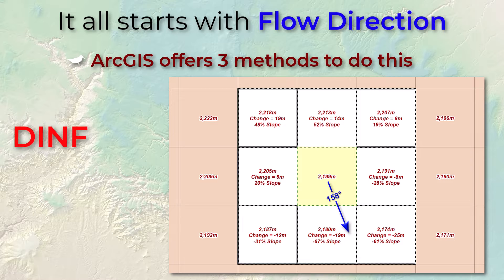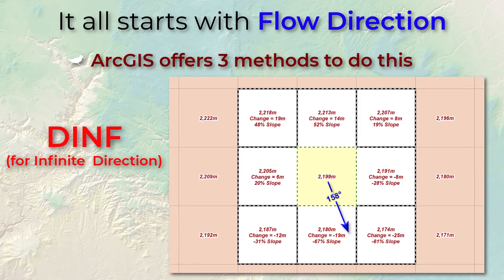The second method is called DINF, which stands for infinite direction — and infinite in this case just means that it can be any value between the range of zero and 360 degrees. It doesn't mean that there's an infinite number of directions it'll steer into. It's basically just the aspect direction, and this method steers the water into the steepest downslope direction. So in this case the aspect of that central cell is 158 degrees, and so this method would send water flow in exactly that direction.